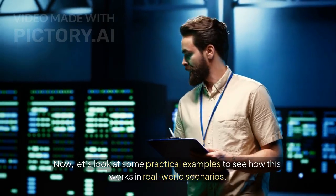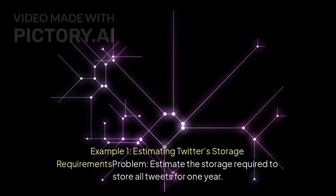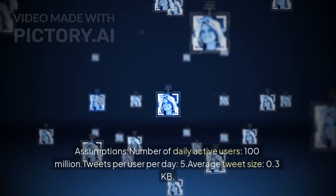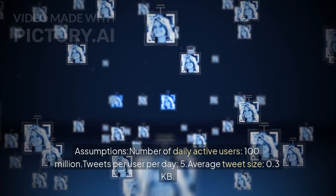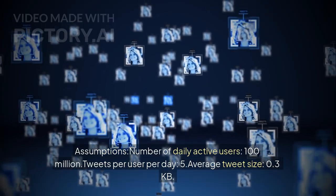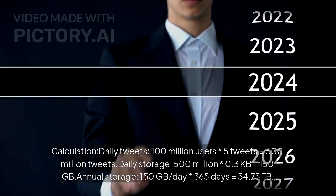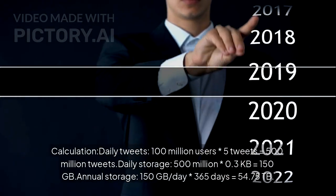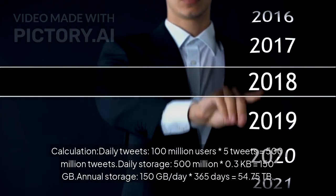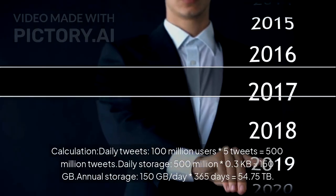Now let's look at some practical examples. Example 1: Estimating Twitter's storage requirements. Problem: estimate the storage required to store all tweets for one year. Assumptions: 100 million daily active users, 5 tweets per user per day, average tweet size 0.3 KB. Calculation — daily tweets: 100 million × 5 = 500 million tweets. Daily storage: 500 million × 0.3 KB = 150 GB. Annual storage: 150 GB × 365 days = 54.75 TB.